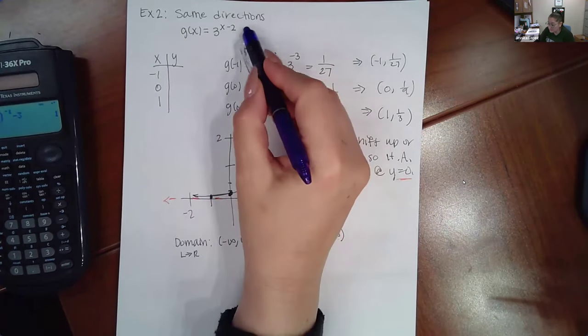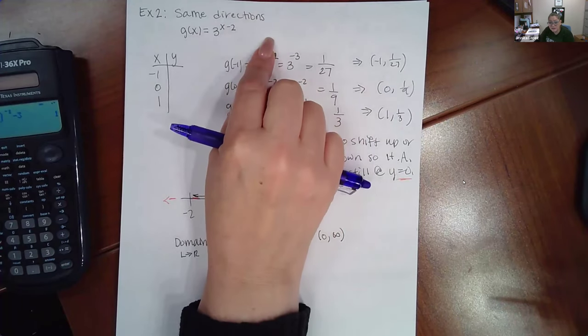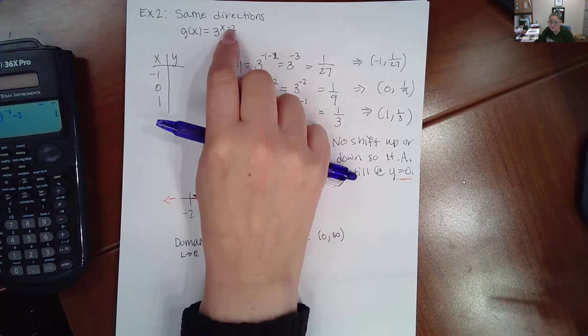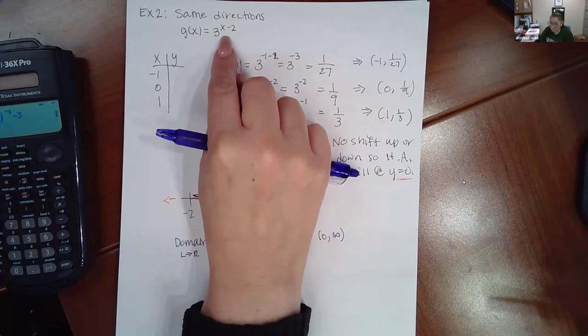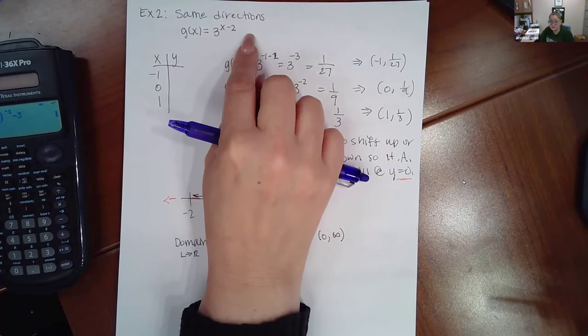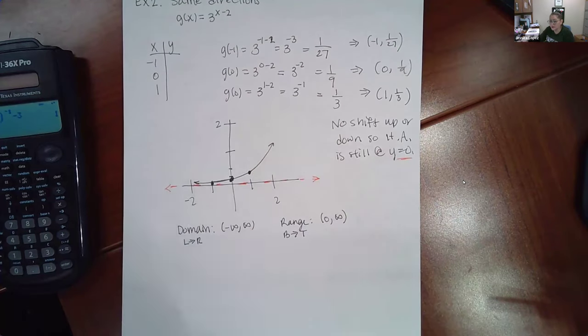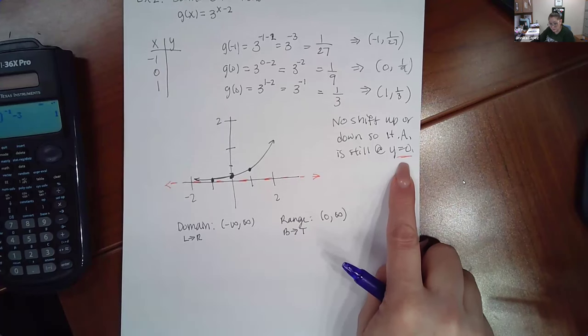But since we don't have add or subtract over here outside of the exponential part—this minus two is in the exponent so it's part of the exponential part or term—we don't have an extra plus or minus constant on the side, so therefore our asymptote is still going to be at y equals zero.